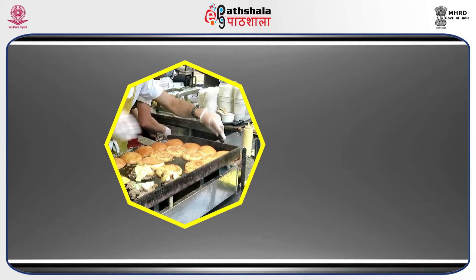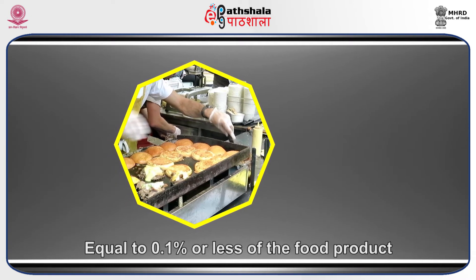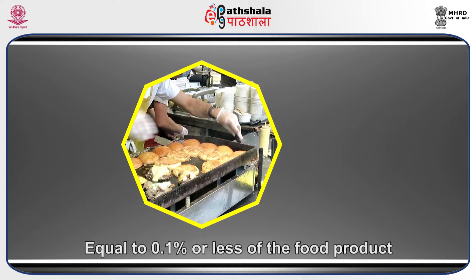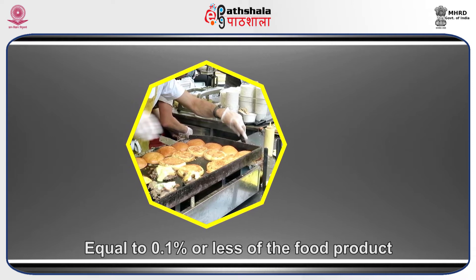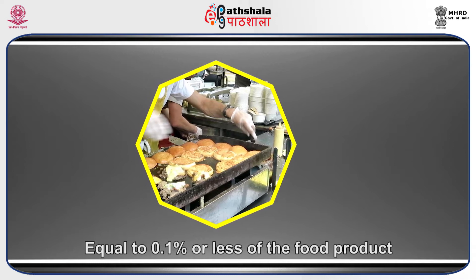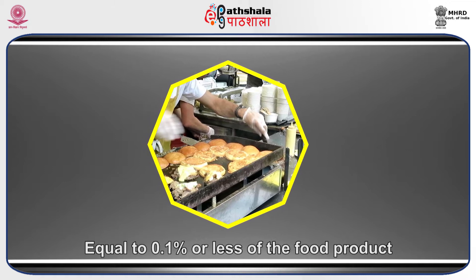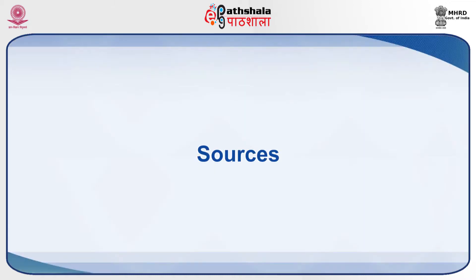A relatively small amount of enzymes is sufficient to accomplish a reaction, since enzymes are catalysts. For example, an enzyme preparation in most food uses is equal to 0.1 percent or less of the food product. Enzymes are generally not present in the final food product as most enzymes are destroyed during food processing.